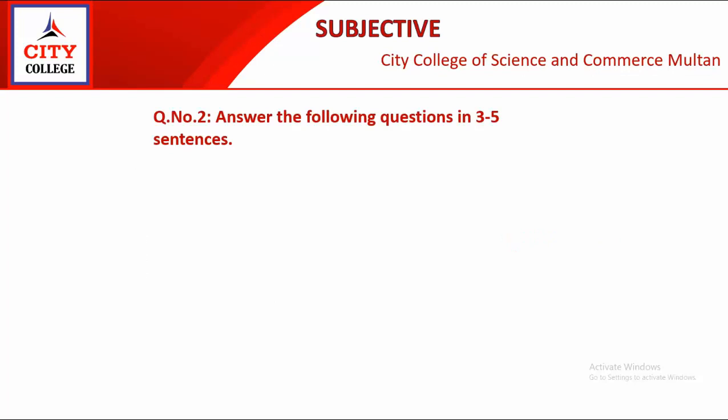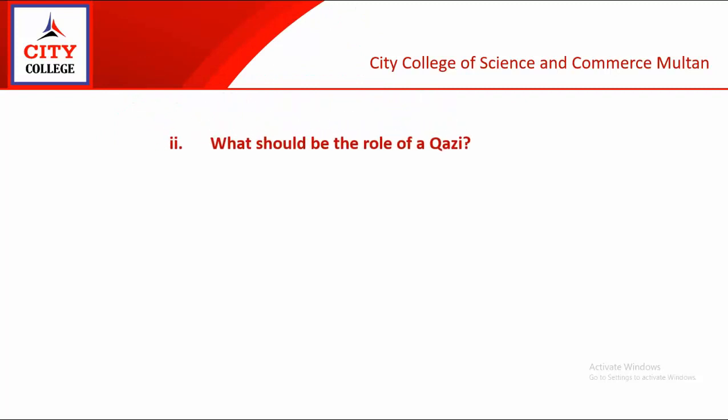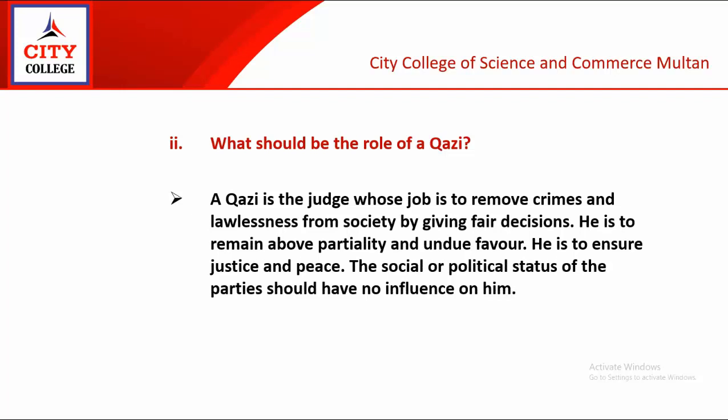Now we come to the second portion of the paper which is subjective, question number two: answer the following questions in three to five sentences. First short question: Why did the doctor call the sick girl by her first name? Children are often afraid of being pricked by a doctor's injection or swallowing bitter pills; they resist getting examined. The same was the case with Mathilda, but the doctor wanted to create a friendly environment for her safety. That is why he called her by her first name. Next: What should be the role of a kazi? A kazi is the judge whose job is to remove crimes and lawlessness from society by giving fair decisions. He is to remain above partiality and undue favor, and is to ensure justice and peace.